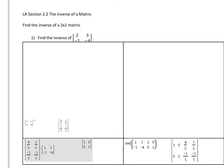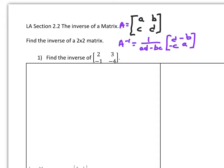This is linear algebra section 2.2: the inverse of a matrix. We want to find the inverse three ways — one is kind of cheating using the calculator. We're going to need this formula: if I give you A with components A, B, C, D, then A inverse equals one over the determinant of A, multiplied by a modified matrix where you switch along the main diagonal and change the signs on the other diagonal.